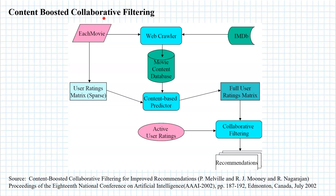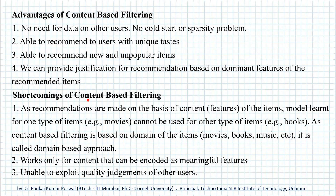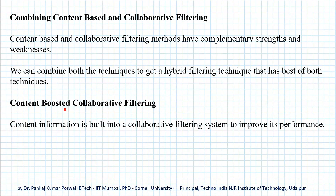In this session, I'm going to discuss content-boosted collaborative filtering. What it means is that the two main approaches for developing a recommendation system — that is, collaborative filtering and content-based filtering — are not mutually exclusive. They can be combined, and there are very good reasons for combining the two ideas, because the strengths of both approaches are complementary in nature. If we combine both, we get the best of both worlds. Such an approach is called content-boosted collaborative filtering.